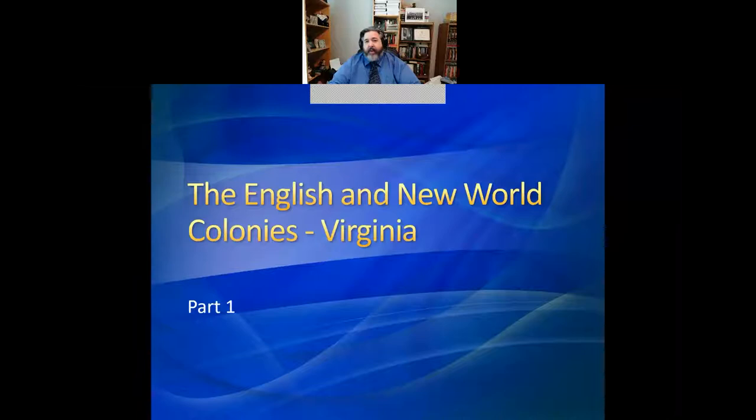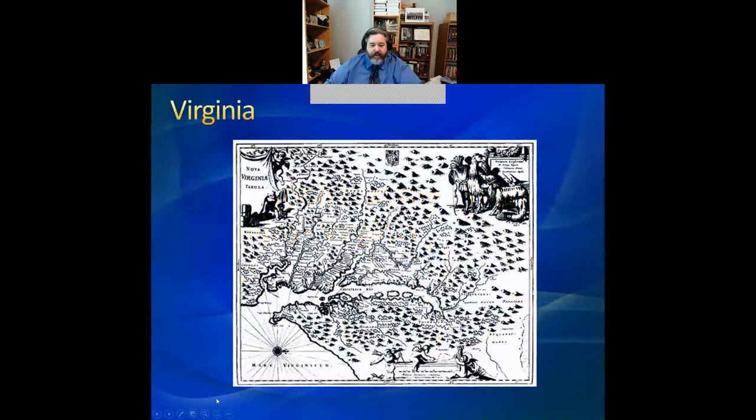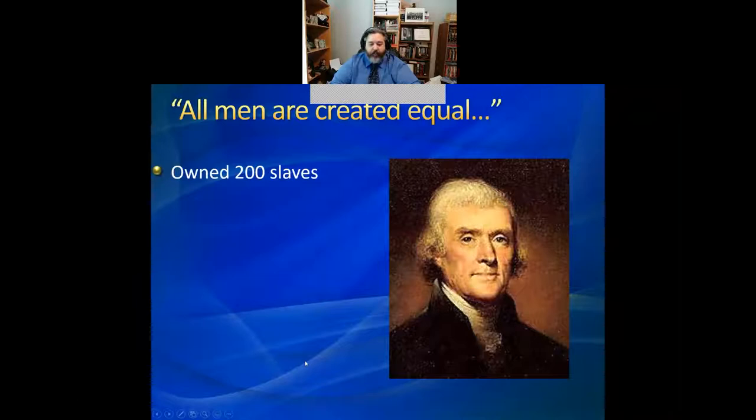The first place we need to understand, if we're going to see how the United States came into being from the perspective of the British colonial experience, we need to look at Virginia. Virginians are critical to the foundation of what becomes the United States, and there are very simple reasons why.